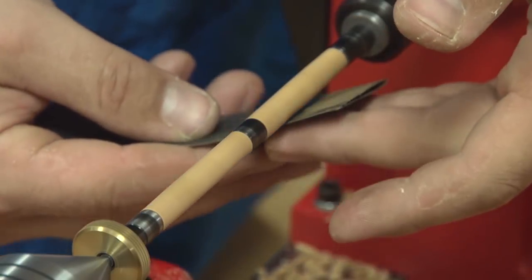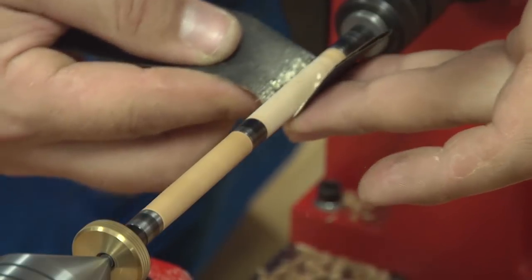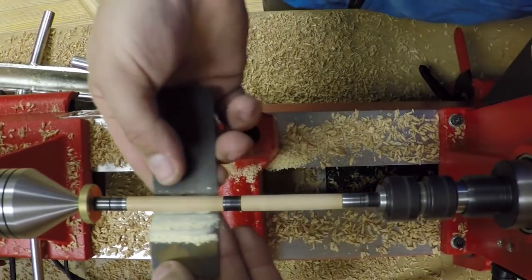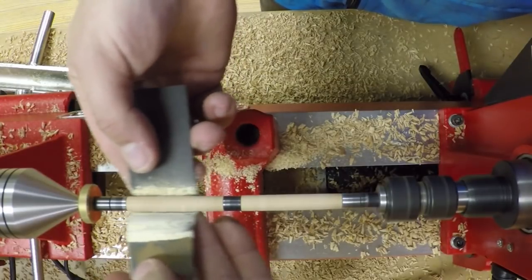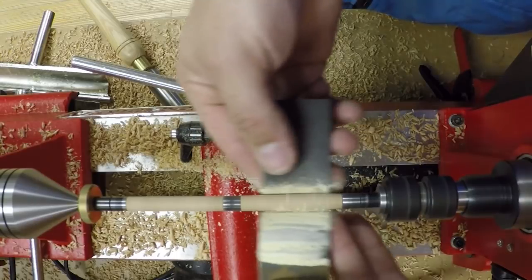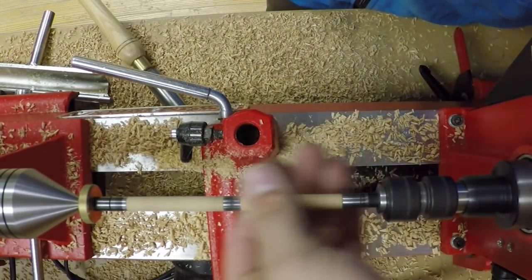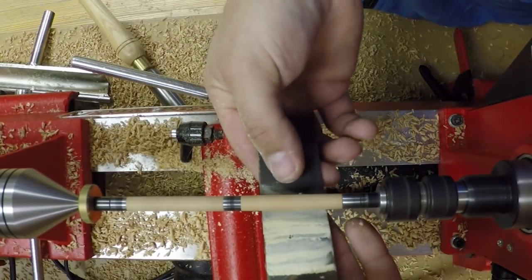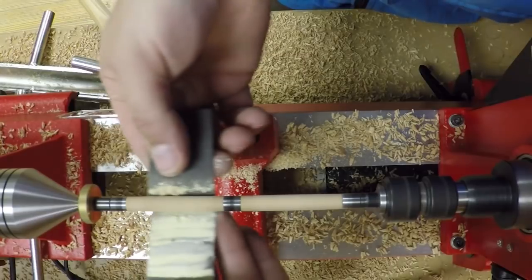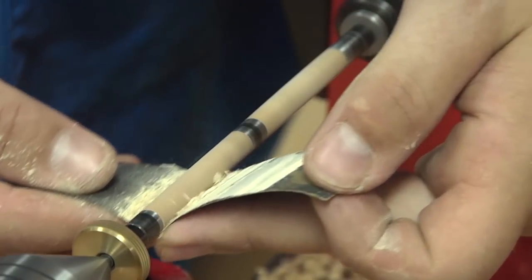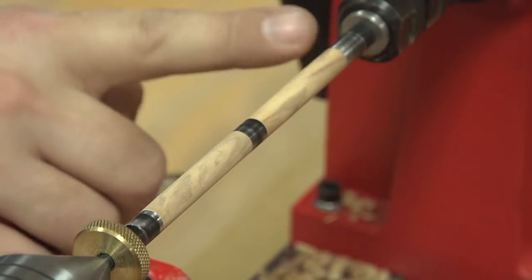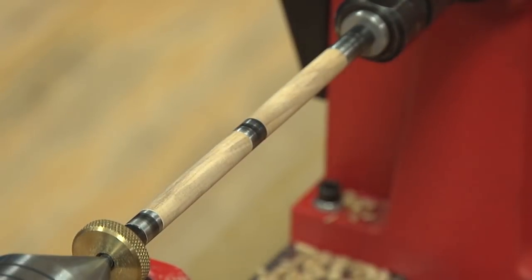So then I can quickly sand them right on the lathe. Normally I would start with probably 220. These were real nice and smooth, so I'm starting with 320. I don't want to have to try to remove those scratches unless I absolutely have to. I do try not to sand the bushings, but as you can see, you do inevitably end up sanding them a little bit. And that's why I don't like to use them as an absolute size reference. They're just a gauge. After the first grit, I'll stop and make sure that I got rid of any tool marks. And I did, so I can just progress through the grits.